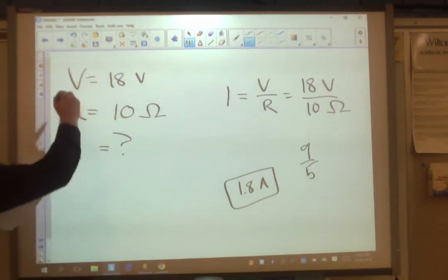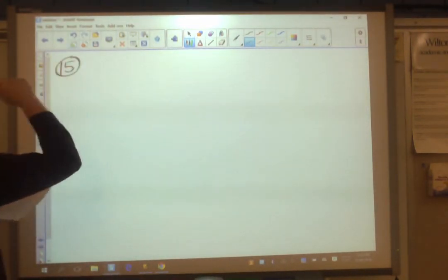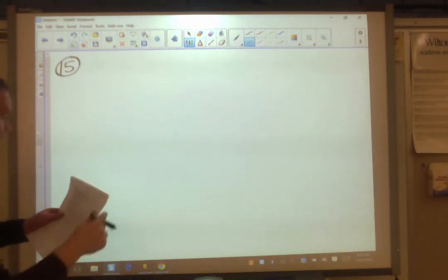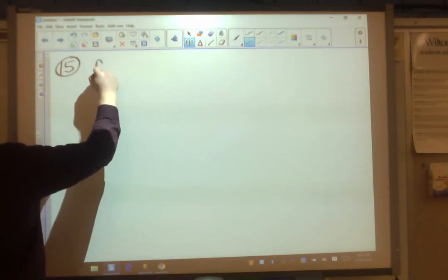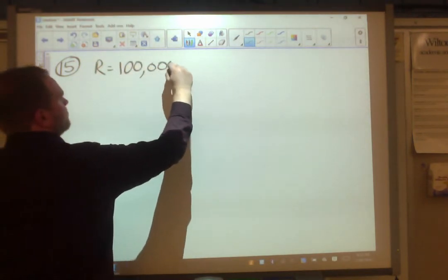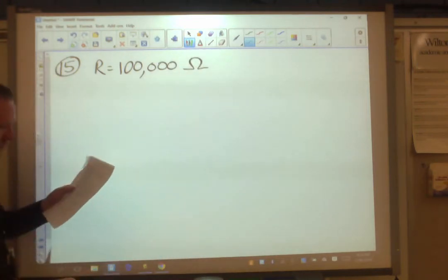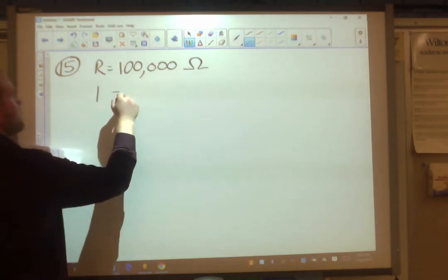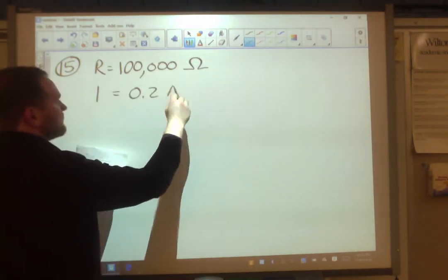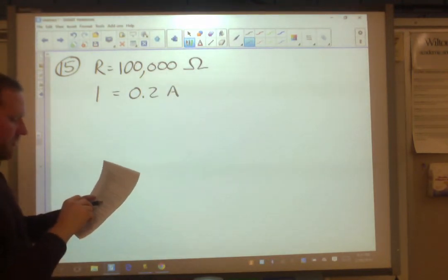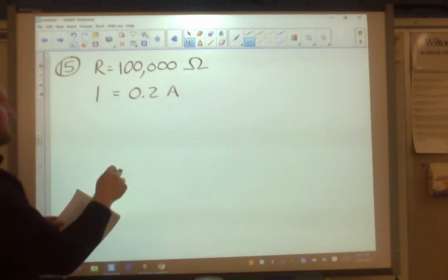Number 15. The human body when dry has about 100,000 ohms of resistance. Resistance equals 100,000 ohms. It has been measured that 0.2 amps of current flowing through a human is enough to be fatal. Current equals 0.2 amps. What is the maximum voltage that a human could theoretically sustain before this threshold is reached?